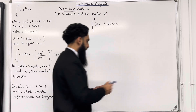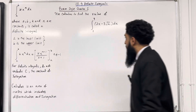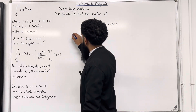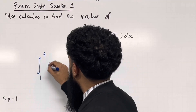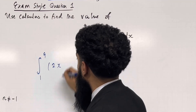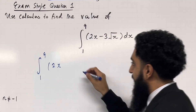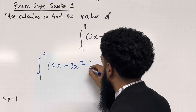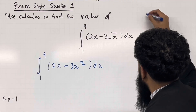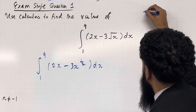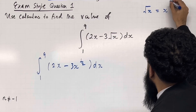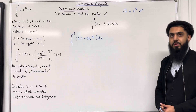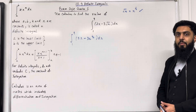Use calculus to find the value of the integral from 1 to 9 of 2x minus 3 square root x dx. The key word is calculus, which involves differentiation and integration. The specific technique we're going to use for this question is integration. Let's proceed with the solution. We are trying to calculate the value of the integral from 1 to 9 of 2x, and the second term can be rewritten as minus 3x to the power 1 half dx. Using laws of indices, square root x is the same as x to the power 1 half. Now I'm going to apply term by term integration.